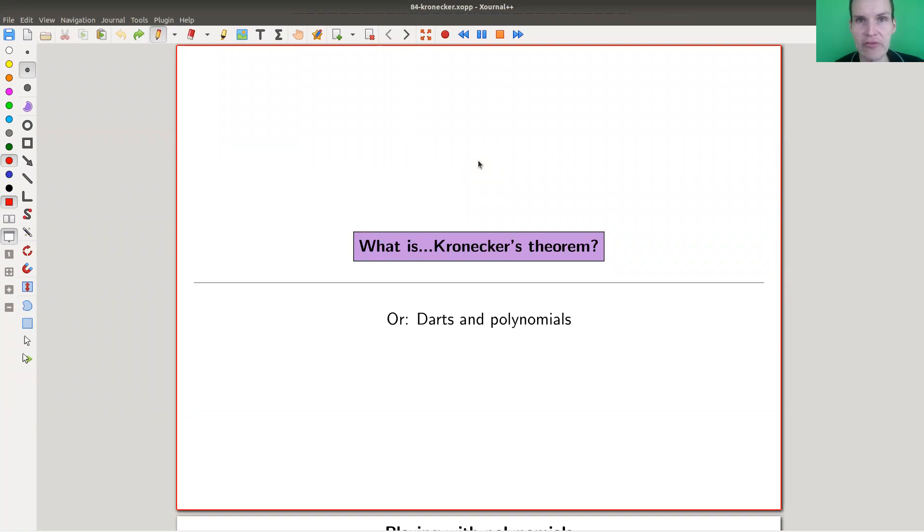Okay, welcome everyone to my continuation of what are my favorite theorems, my very biased collection as usual. Today I would like to talk about a theorem which I call a Kronecker theorem. It's not just that I call it Kronecker theorem, it's called Kronecker theorem. The problem is there are many theorems named after Kronecker. This would be a specific one.